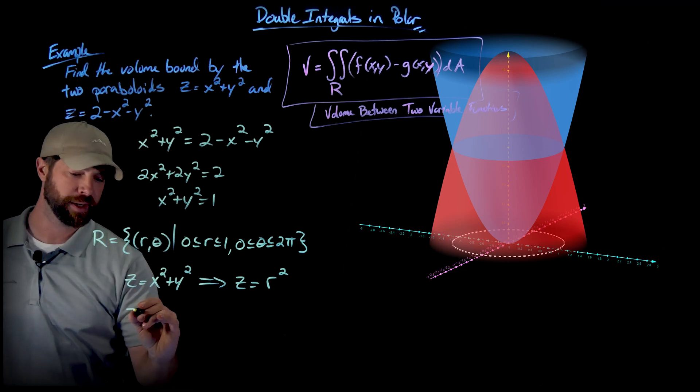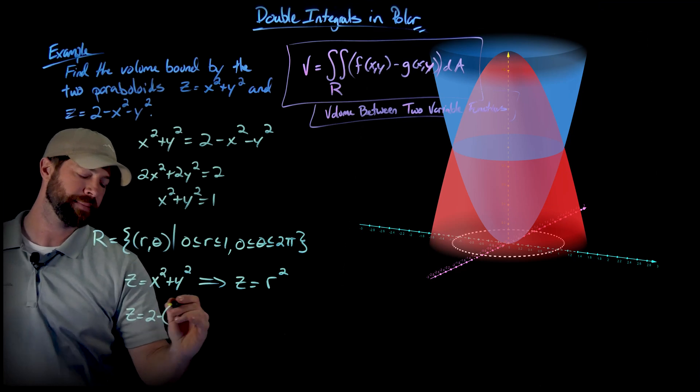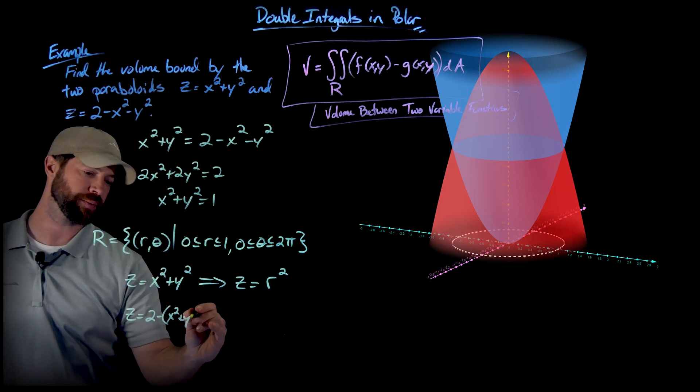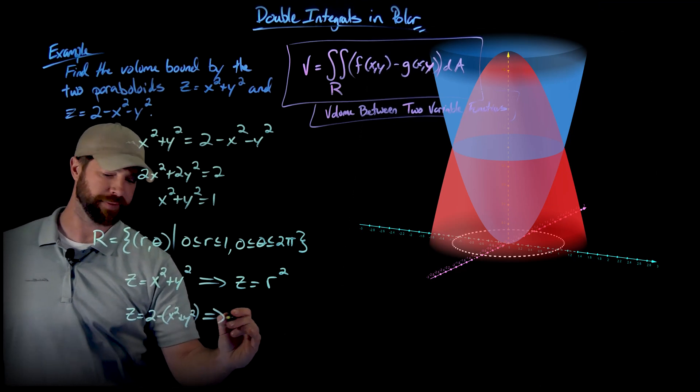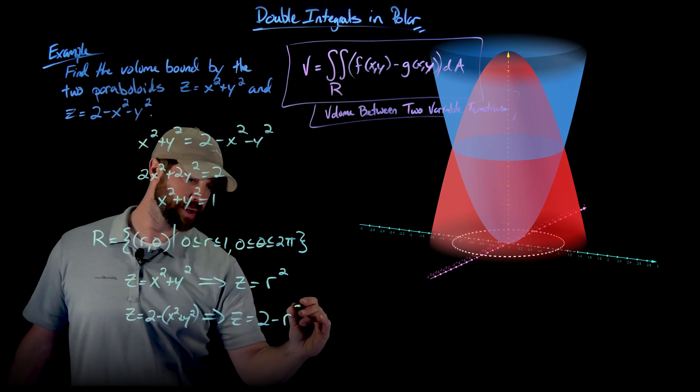And this function right here, I'll just write this as 2 minus (x squared plus y squared). And so this function is going to be 2 minus r squared.